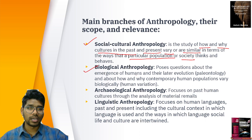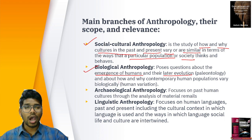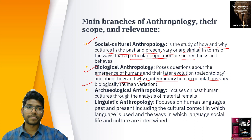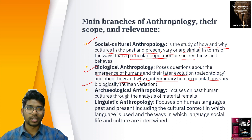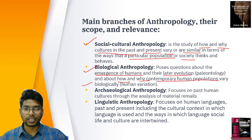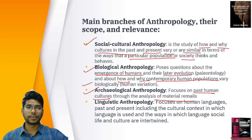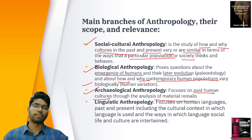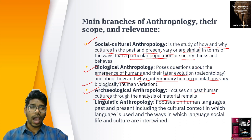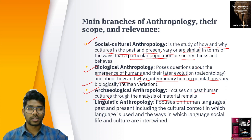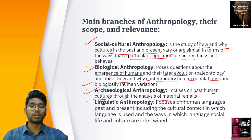Biological anthropology addresses the emergence of humans and later evolution, and how and why contemporary human populations vary biologically — why Africans, Americans, and Asians look morphologically and physiologically different, and how they evolved into diverse groups. Archaeological anthropology focuses on past human cultures through material remains — fossil remains are the only way we can establish how humans evolved, both biologically and culturally.